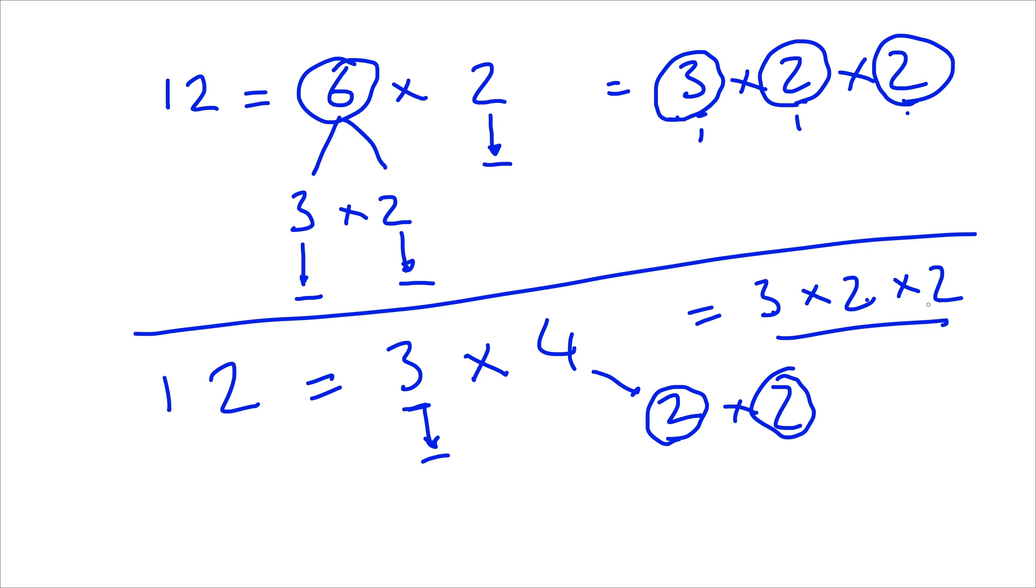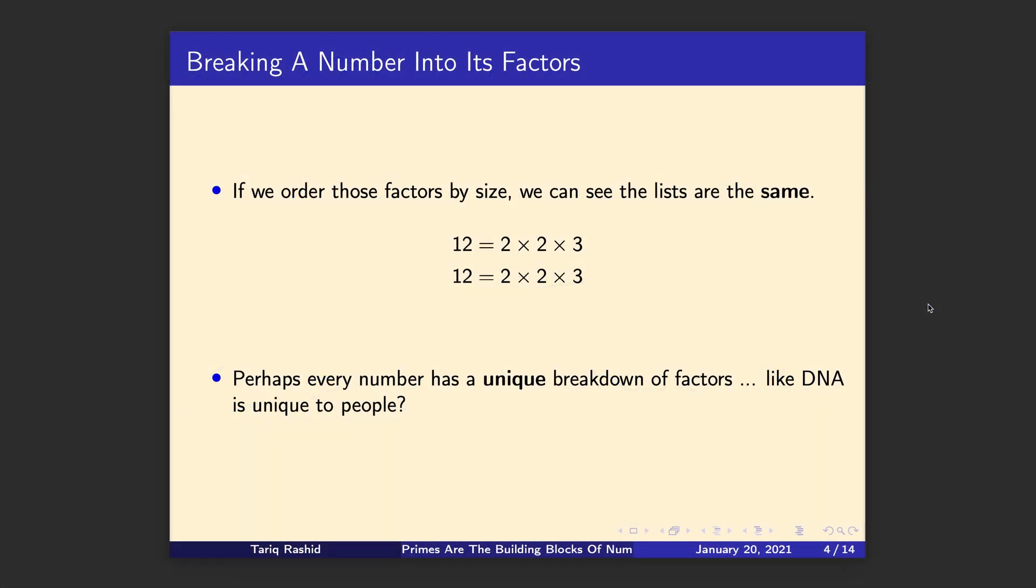That list 3, 2, 2 is this list here 3, 2, 2. So is there something there? Let's have a look. So there's our example just listed in order now. 2, 2, 3 in order of size and 2, 2, 3. And they're the same. So the question we have to ask ourselves is, is this breakdown into prime numbers, is it unique?